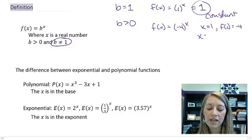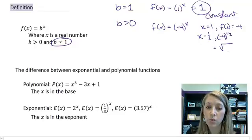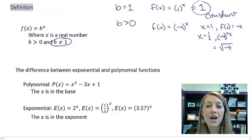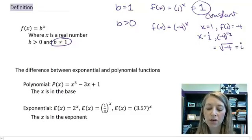What happens if x is equal to 1 half? Then I would have negative 4 to the 1 half. Or if I rewrote that, we know that 1 half is equivalent to the square root, square root of negative 4. And I know that I cannot take the square root of negative 4 because that is an imaginary number.